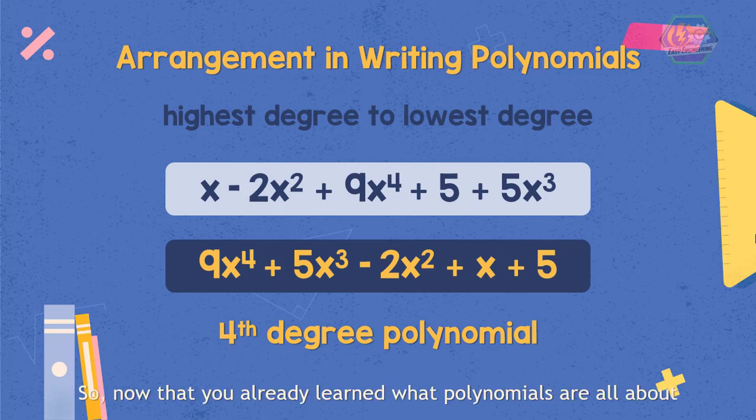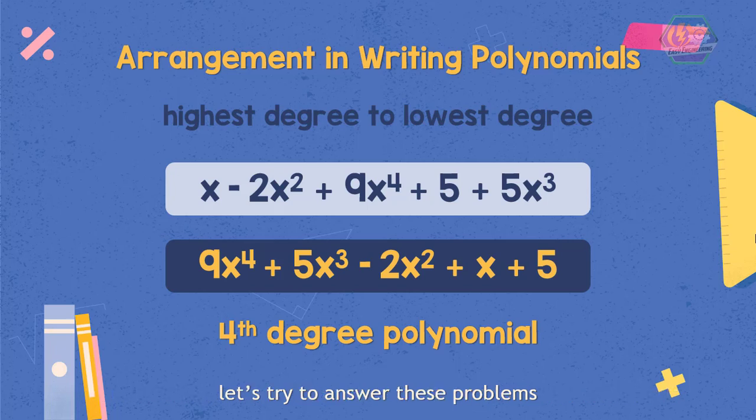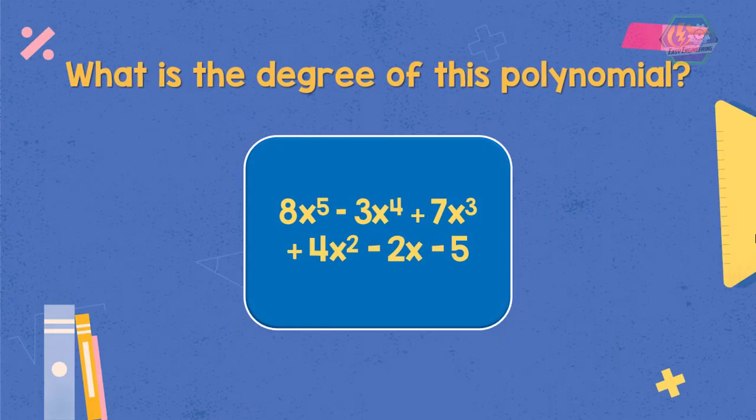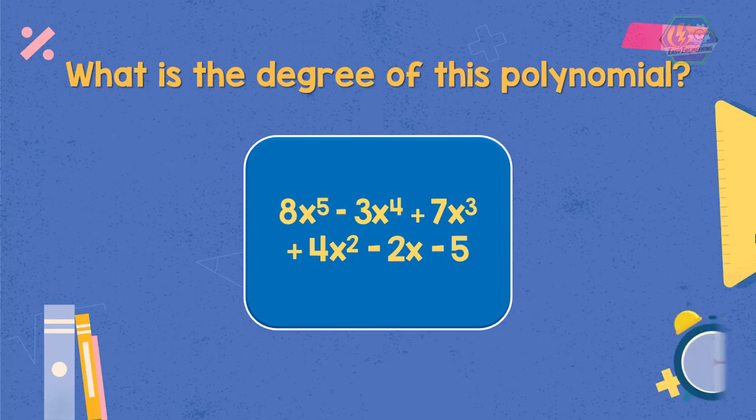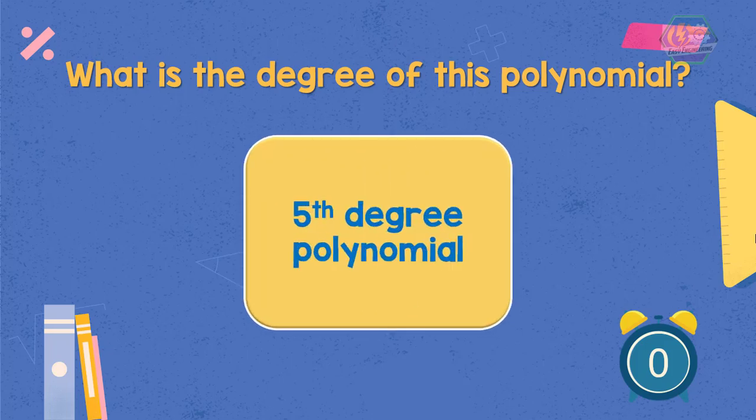Now that you already learned what polynomials are all about, let's try to answer these problems. What is the degree of this polynomial? 8x to the power of 5 minus 3x to the power of 4 plus 7x cubed plus 4x squared minus 2x minus 5. Correct! This is a fifth degree polynomial.